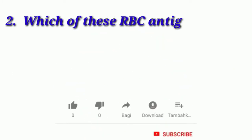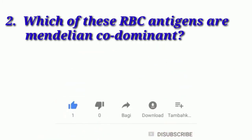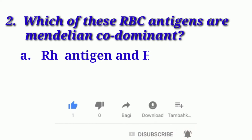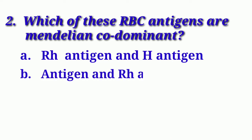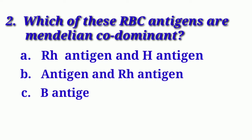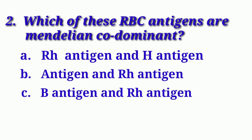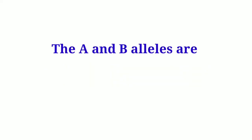Our next question is: Which of the RBC antigens are Mendelian co-dominant? Option A: Rh Antigen and H Antigen. Option B: A Antigen and Rh Antigen. Option C: B Antigen and Rh Antigen. And Option D: A Antigen and B Antigen. We know the A and B alleles are co-dominant.